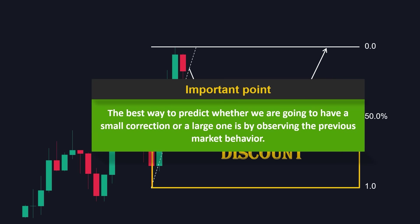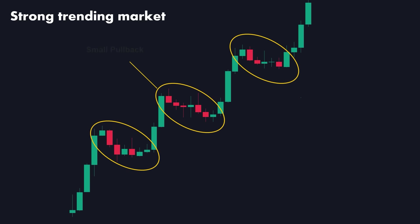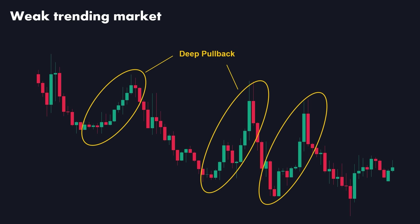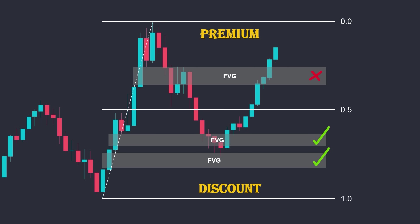The best way to predict whether we are going to have a small correction or a large one is by observing the previous market behavior. In strong trends, we usually have small pullbacks with significant momentum. In trends with deep retracements, we expect a larger correction compared to strong markets. The same concept is valid with the optimal trading zones. In this example, if we look at the left-hand side, we can identify three fair value gap areas. When the price pulls back to these areas, they will act as support and push the price higher. But if we wanted to place a buy limit, these two would have been our choice. The difference is that the higher one is located inside the premium side of the range and the lower ones are inside the discount. We are only interested in buying inside the discount and selling inside the premium. This is a more conservative way to enter trades, resulting in a higher risk-to-reward ratio.